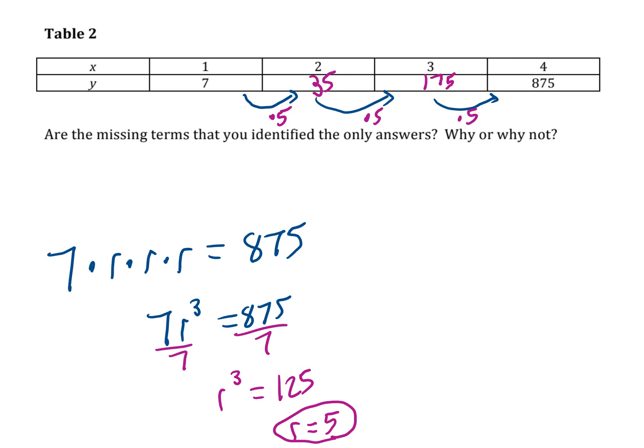Does negative 5 work? Well, let's just try it. So if I made it negative 5, well then 7 times negative 5 would be negative 35. And negative 35 times negative 5 would be positive 175. Multiplying by negative 5 would give me negative 875. So in this case, that strategy doesn't work, the negative doesn't work. So are the missing terms we identified the only answers? Yes. We can see that from my work shown here.